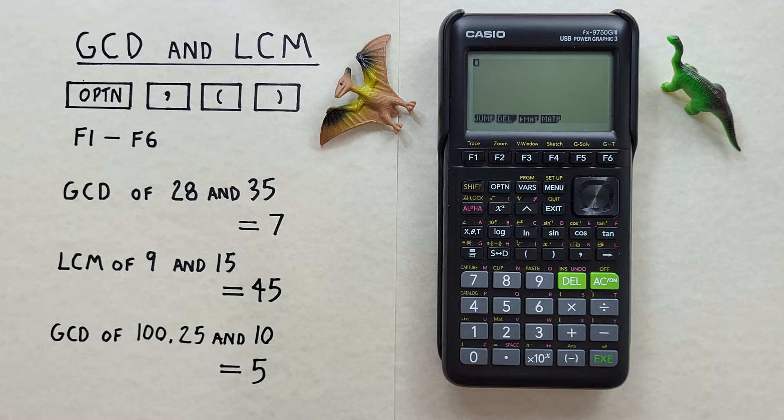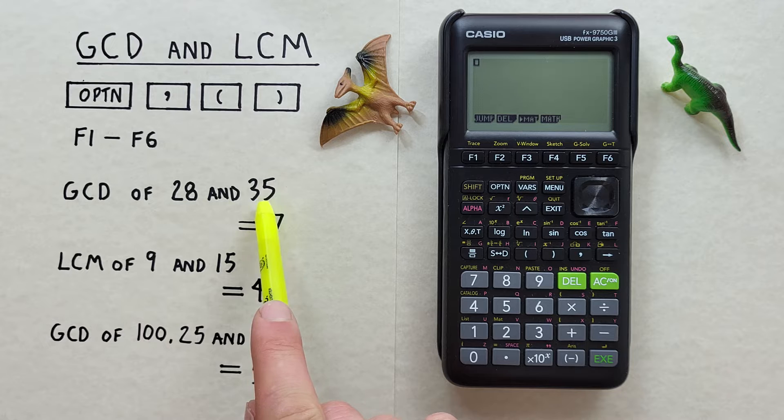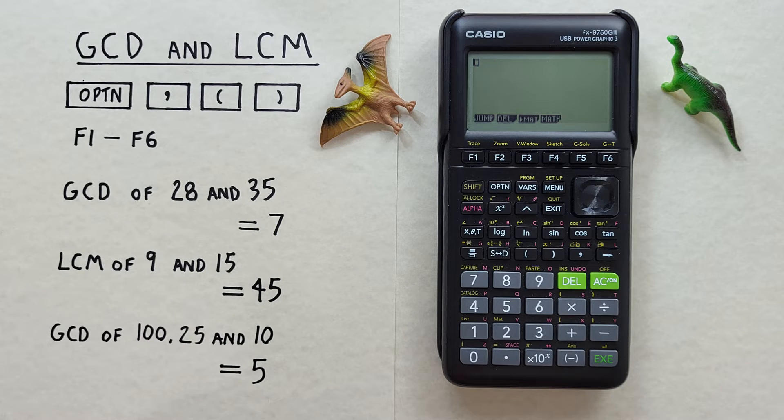For our first example, let's find the GCD of 28 and 35. To get started, we have to find GCD in our menus. To do that, we start by hitting Option,